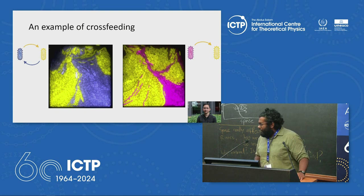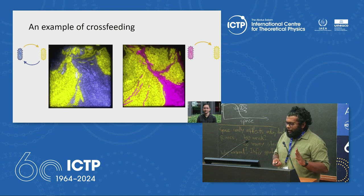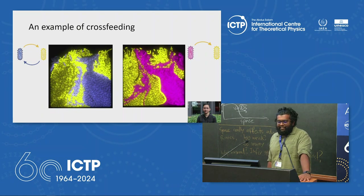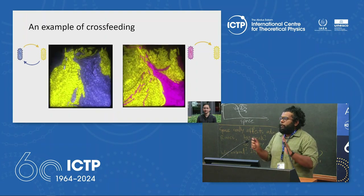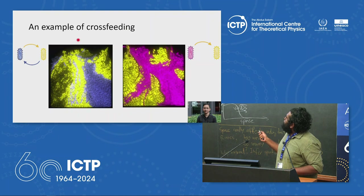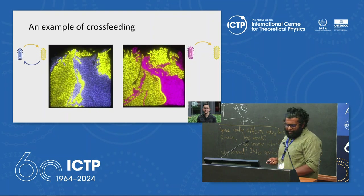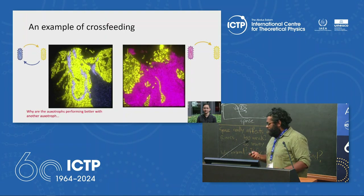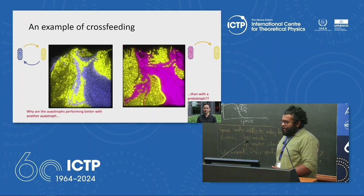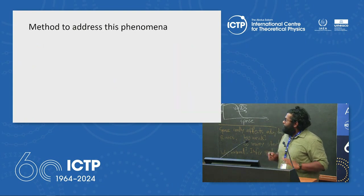Why do auxotrophs perform better with another auxotroph rather than with a prototroph? This is one of the questions I aim to answer. Cross-feeding describes community interactions and resource management, but we do not yet have a mechanistic explanation for how much cross-feeders grow in different nutrient conditions. On the other hand, the proteome sector model — where bacteria regulate physiology by changing expression of different parts of the proteome — does have a relatively better mechanistic explanation for growth in different nutrient conditions.